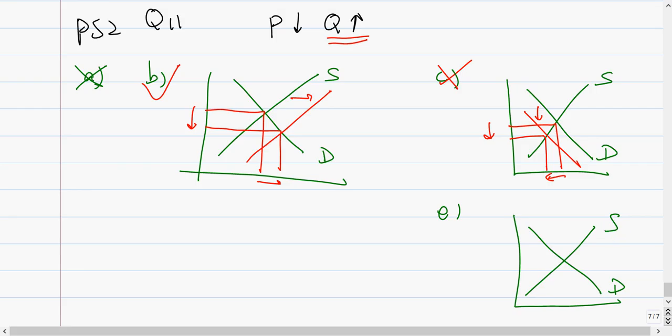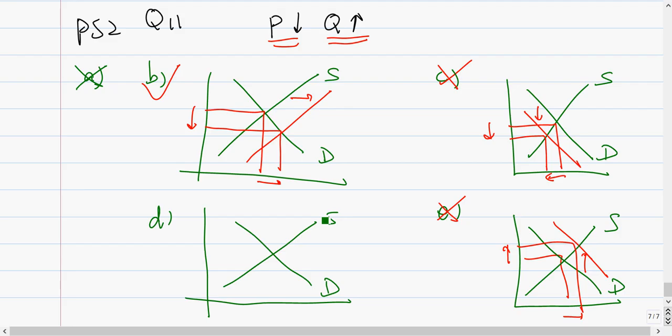In B it says there's an increase in supply. So let's draw demand and supply. Increasing supply means shift to the right, not shift up, shift to the right. It's an increase in supply. When this happens compared to the original and the new one, there is a decrease in price and there is an increase in quantity, which is exactly what we want.